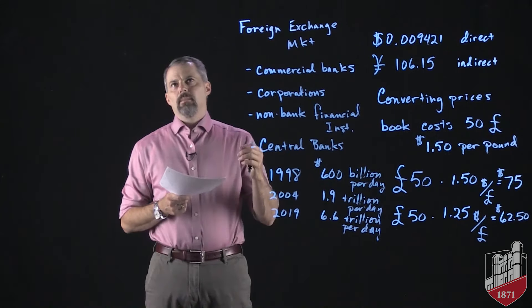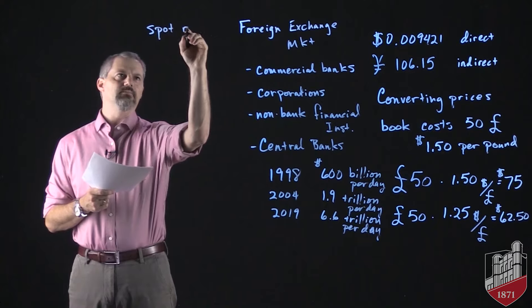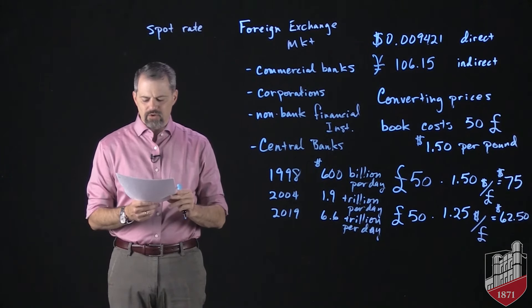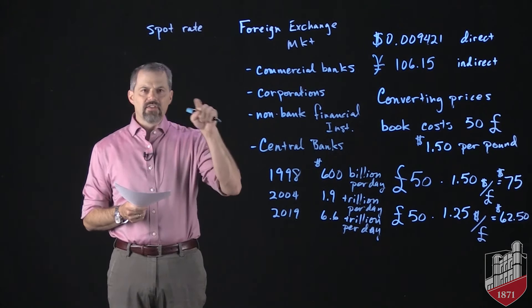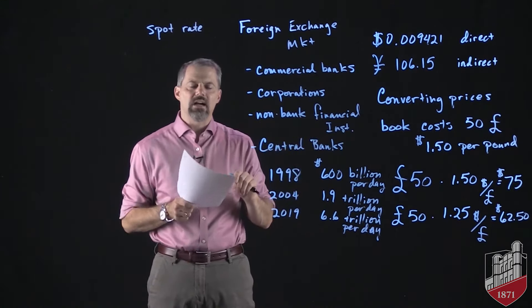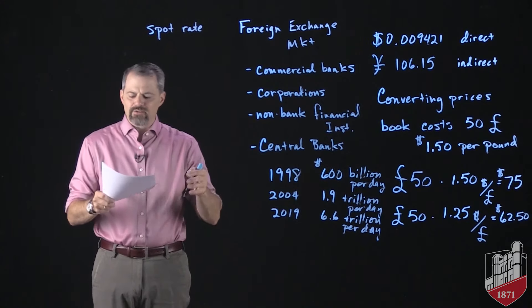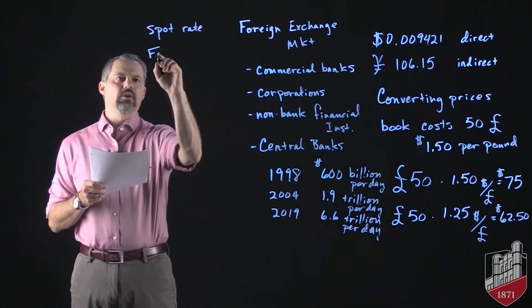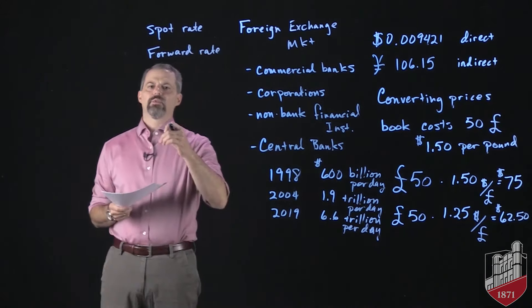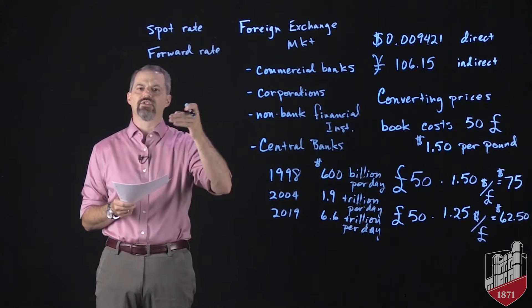We can think about different types of prices. A spot rate is the price or exchange rate quoted to you in on-the-spot trading — if you were going to purchase British pounds or euros right now, you would be quoted the spot rate, and that's called a spot transaction. There's also a forward rate — a rate quoted to you for an exchange that's going to take place at some point in the future, more than two days away.